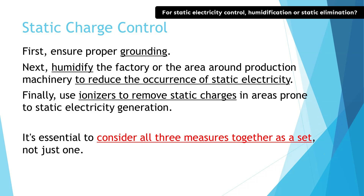Got it! Humidity and temperature can vary from day to day, from season to season. So, first of all, we should try to create an environment free from static electricity as much as possible. If you try to do it only by ionizers, the result can be different depending on changes in environment, so I think this is the best order. About the first question, I would say we need both humidification and static elimination.